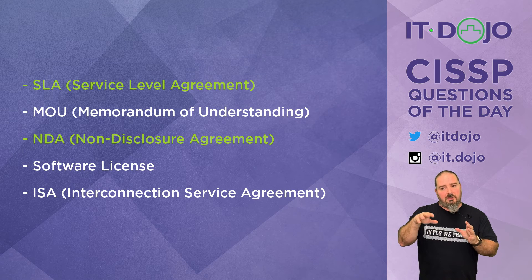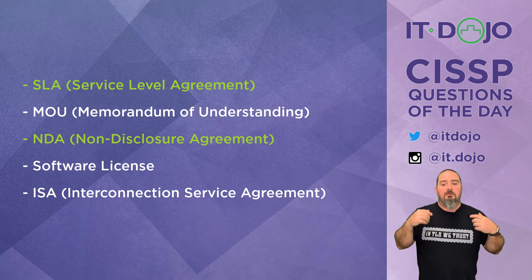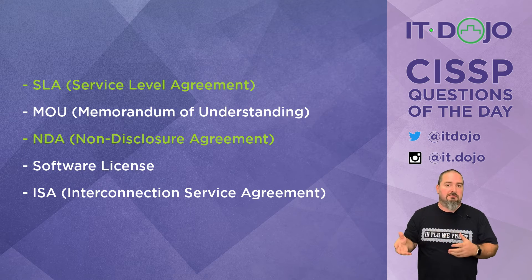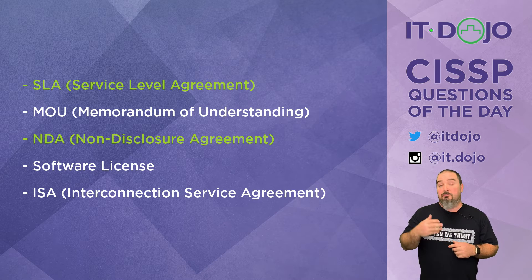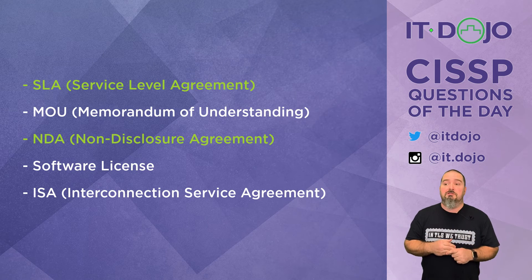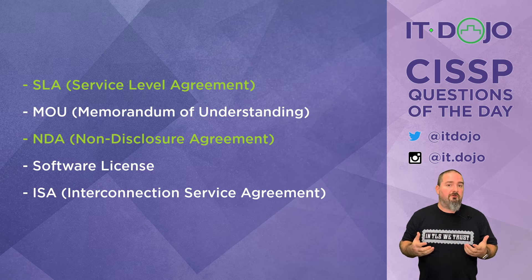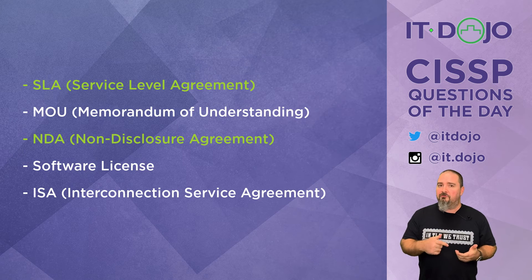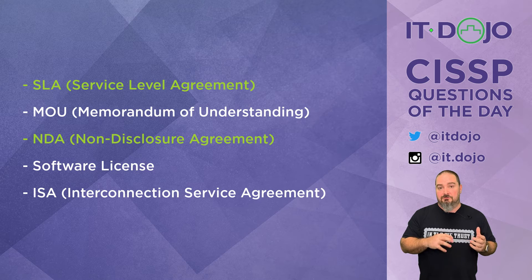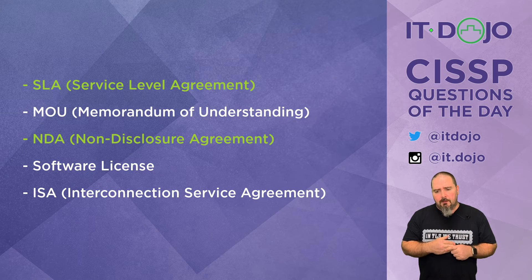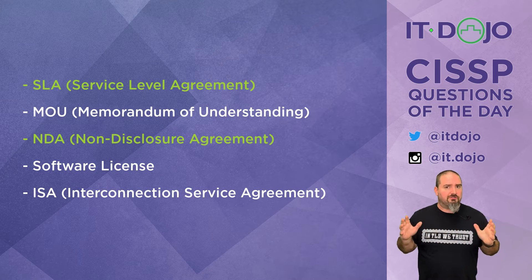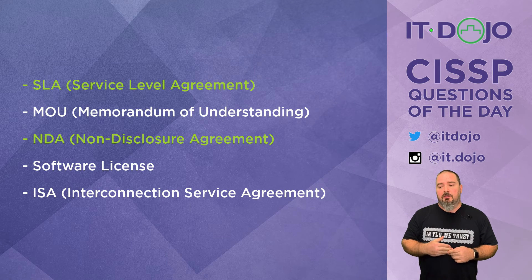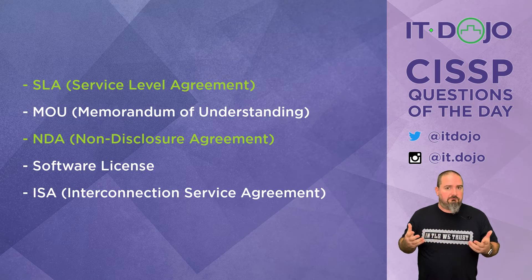The need for licensing shifts when software starts getting installed on your own hardware. With software as a service on a phone, for example, you're usually not accessing it through a browser — there's an app for that, you install the app, and then licensing comes into play. But that doesn't apply to the more traditional models of software as a service, so software license is not the answer here.